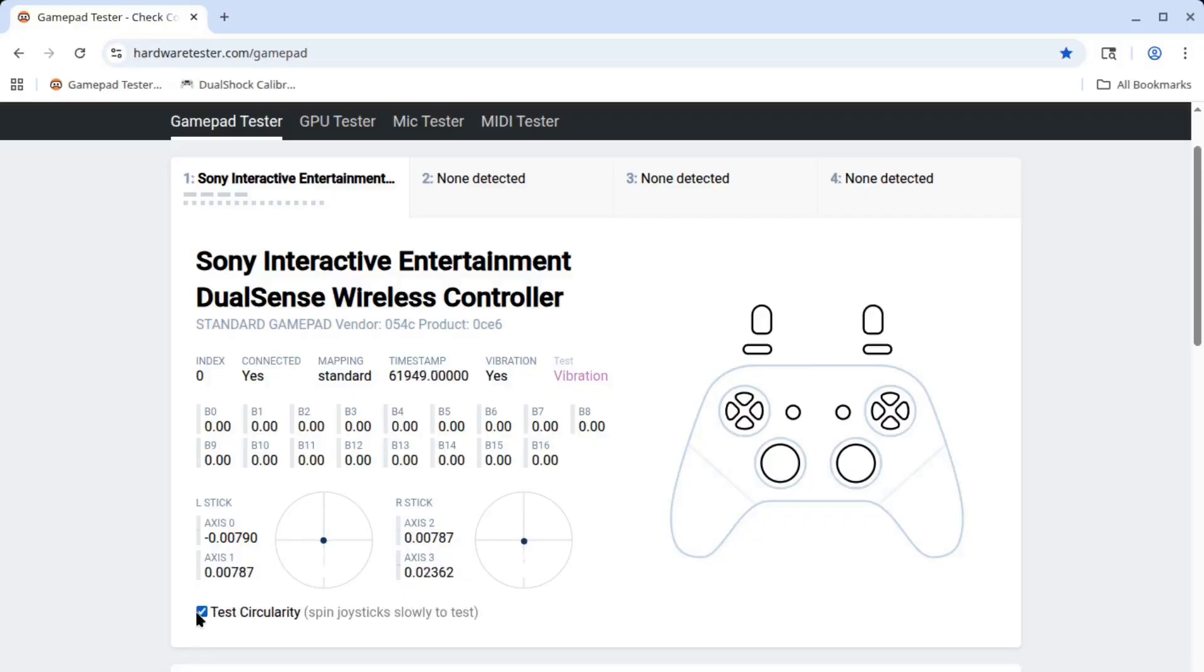Now to the GamePad Tester website. First, I will take a look at the circularity. Pretty well matched joysticks. I like to see the average error in the 6 to 8% range with a pretty balanced circle. The right joystick is very well balanced and I would say the left is about average. They look very good to me.